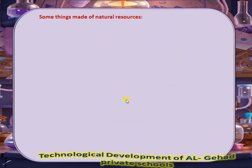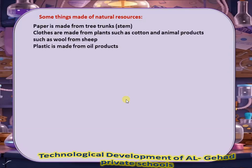Some things are made of natural resources. Paper is made from tree trunks. Clothes are made from plants such as cotton and animal products such as wool from sheep. Plastic is made from oil products.